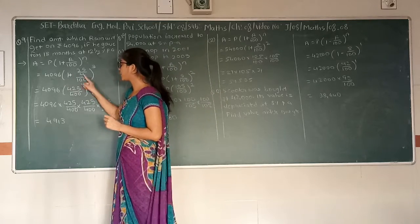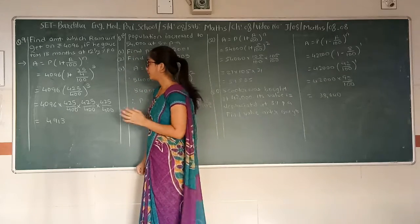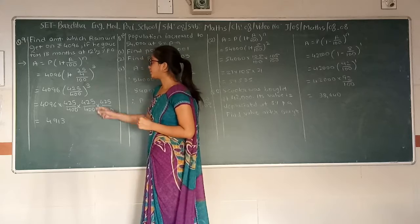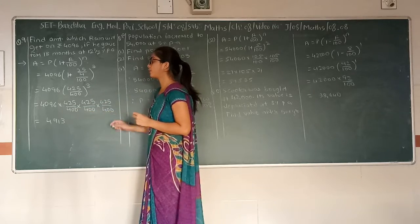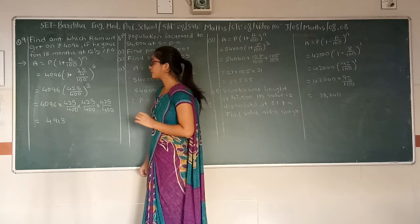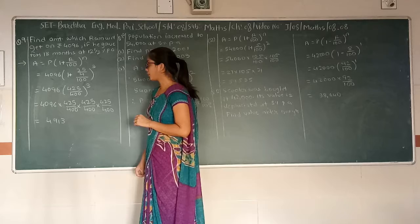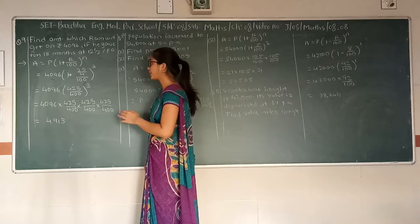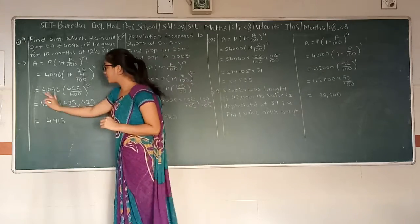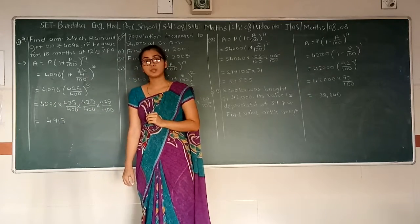Now if we solve this equation we write 425 upon 400 raised to 3, which means 4,096 multiplied by 425 upon 400, three times. If we solve this whole equation we will get the answer 4,913.